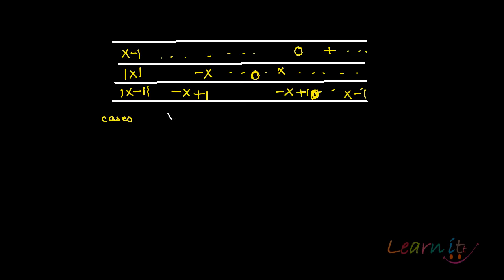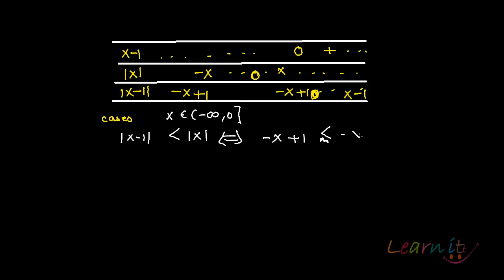Case 1: when x is negative, lying between minus infinity and 0 (0 included). The inequality |x-1| < |x| becomes minus x plus 1 less than minus x. That simplifies to 1 less than 0, which is impossible. This case yields no solution.